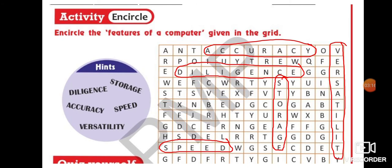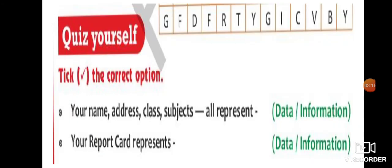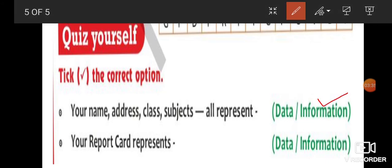Next we are going to do the last part of the activity section, that is quiz yourself. Here you have to tick the correct option. The question is: your name, address, class, subject, everything includes information. What is it? Information.